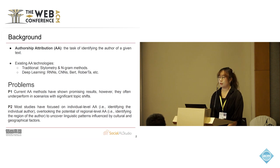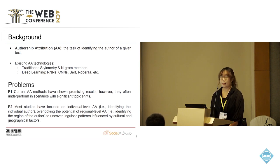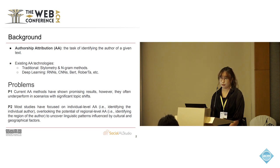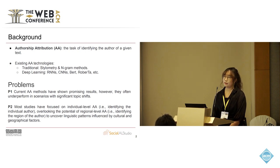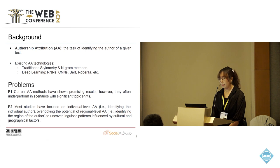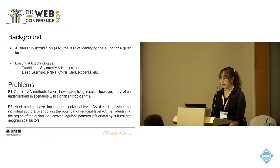So what is authorship attribution? It's a task of given a text, how can we identify the author who wrote it? For now, there are a lot of existing authorship attribution technologies, and we always classify them into two types. One type is the traditional methods, including stylometry and n-gram methods. And there are also deep learning based models, including RNNs, CNNs, BERT, etc.